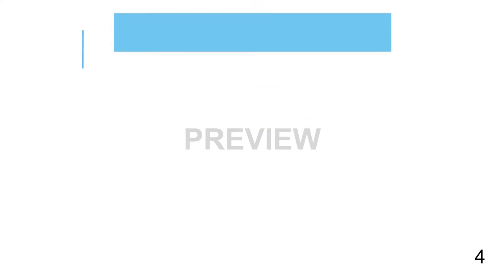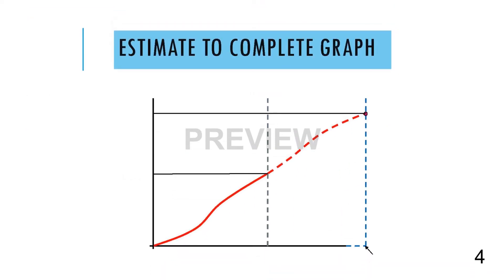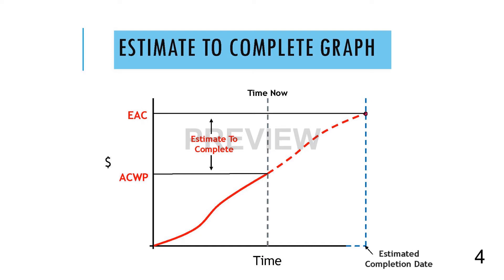This graph demonstrates the relationship between the actual costs on a project and the estimate at completion. The difference between these two data elements is the Estimate to Complete, or ETC. The forecasted time span associated with the ETC is the same as the estimated completion date, which matches the schedule's forecasted completion date for the project.